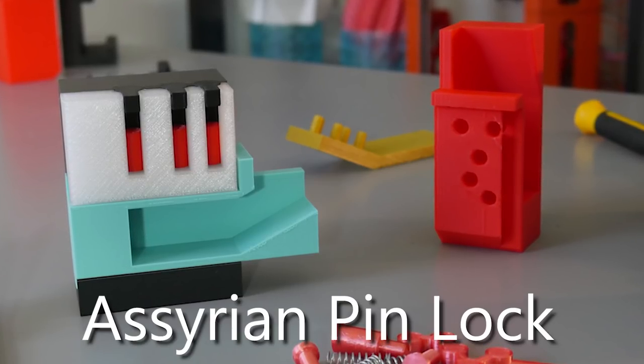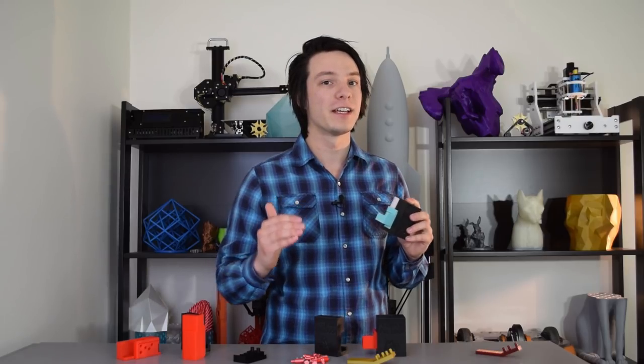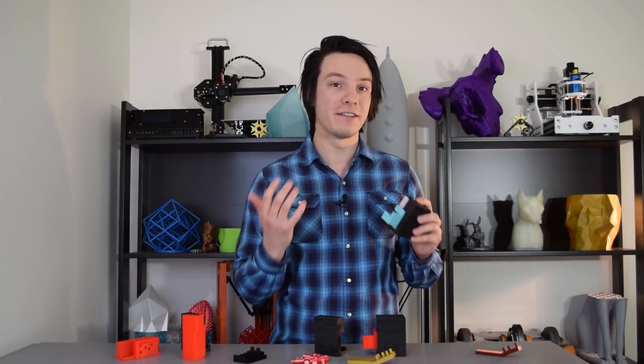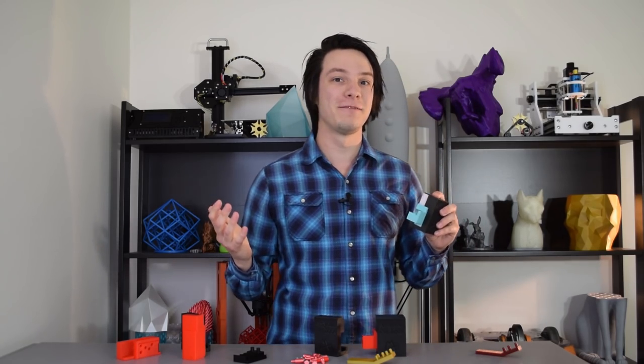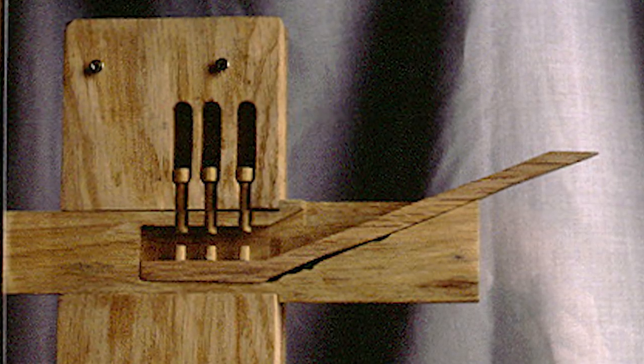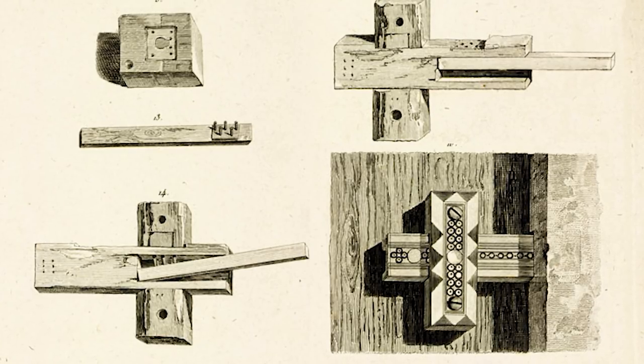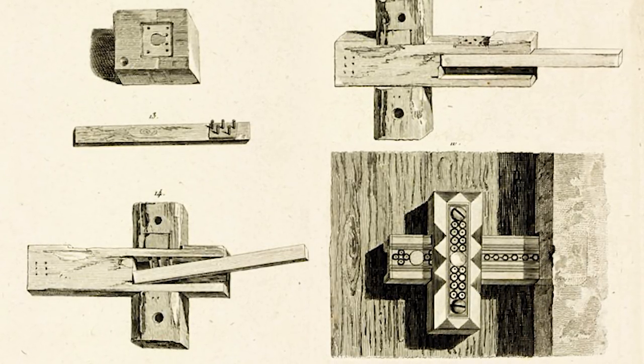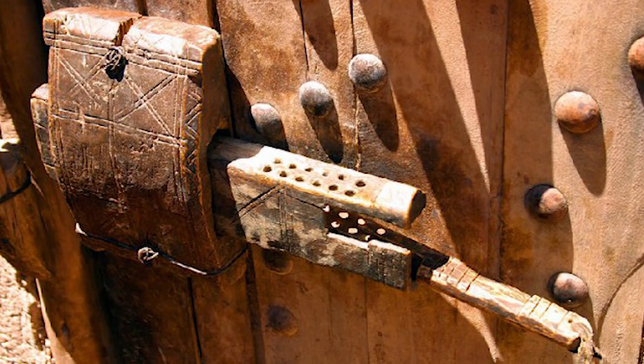This is a model of an Assyrian pinlock, the oldest known examples of a locking device ever found. Physical examples of this locking device were found in the ruins of the Assyrian Palace of Karazabad, located in what is now modern day Iraq. Archaeologists date the examples they found back to 704 BC, however variations of this design are thought to have been used as early as 2000 BC. They're often elaborate in design as you can see with this recreation.